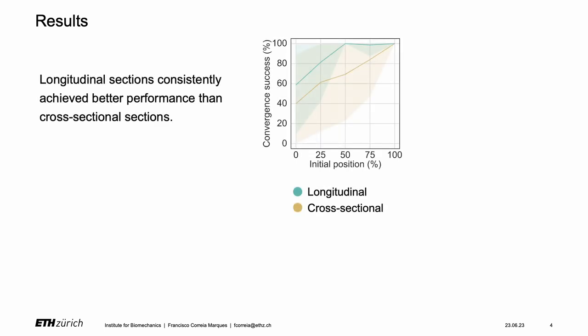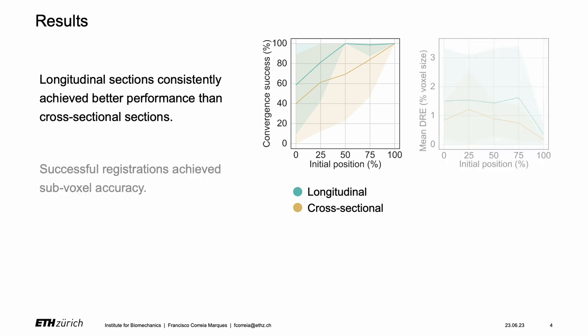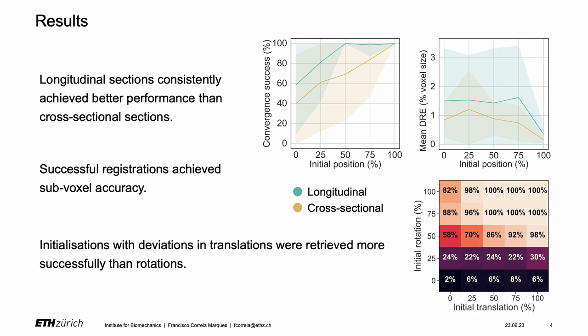Our results show that sections sampled longitudinally consistently achieved better performance than those sampled cross-sectionally. Furthermore, successful registrations achieved sub-voxel accuracy, and initial guesses with deviations in translations were retrieved more successfully than rotations.